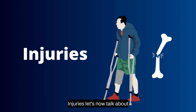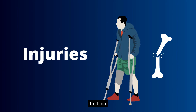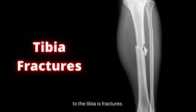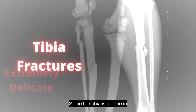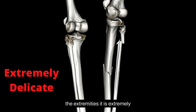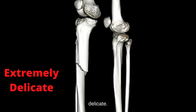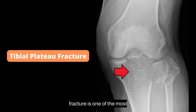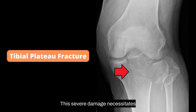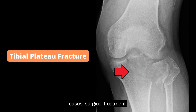Injuries: the most common type of injury to the tibia is fractures. Since the tibia is a bone in the extremities, it is extremely delicate. A tibial plateau fracture is one of the most prevalent types of tibial fracture, and this severe damage necessitates non-surgical and, in certain cases, surgical treatment.